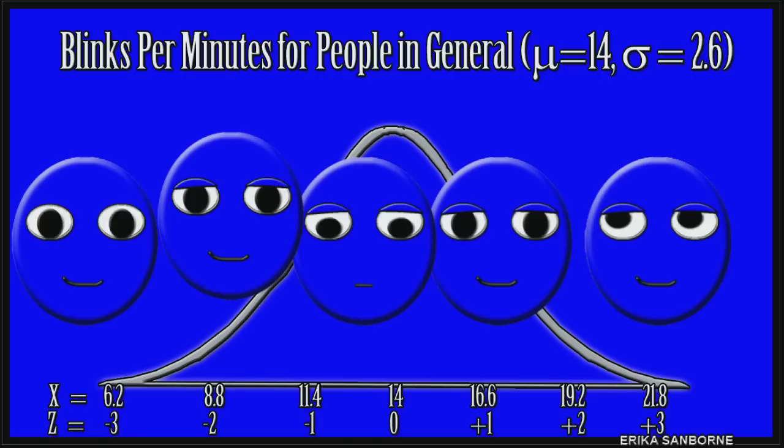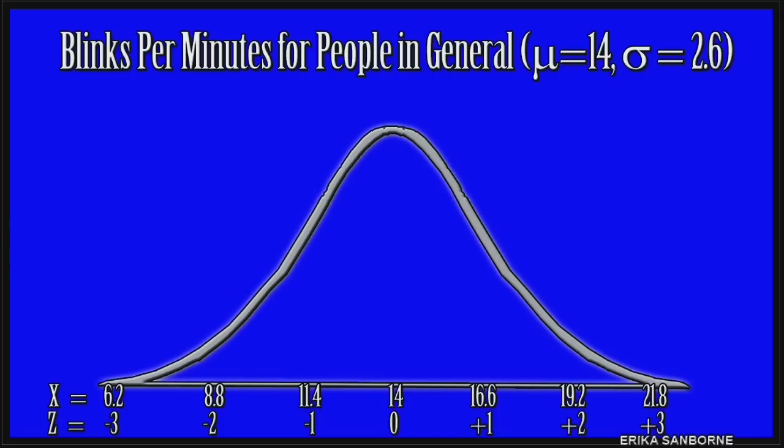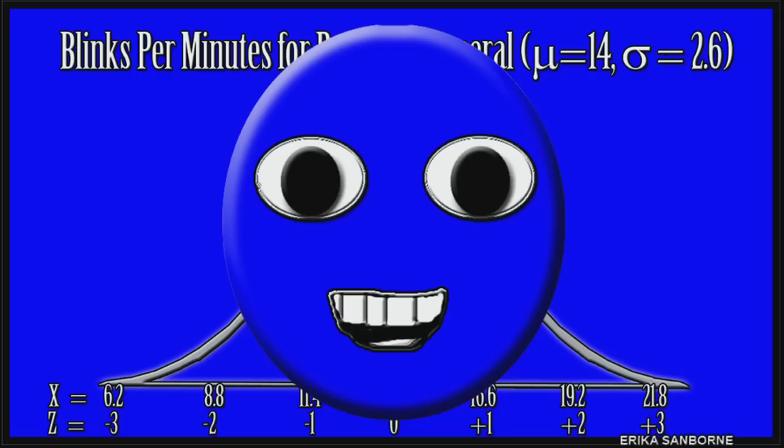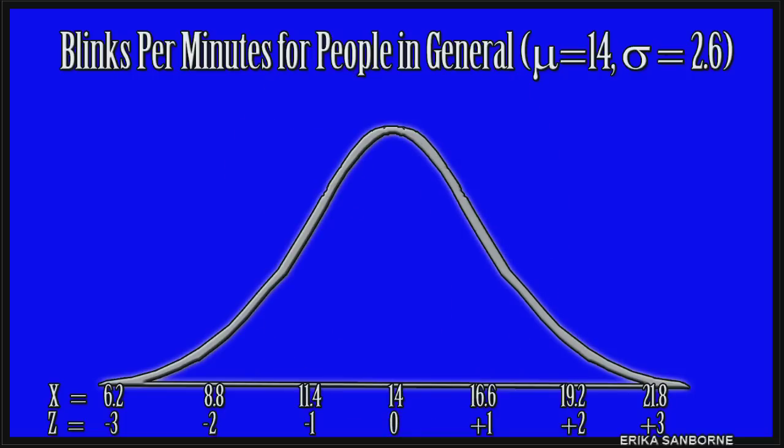Standard deviation tells us roughly the average amount that scores differ from the population mean. All people's blink times are on this picture somewhere, spread out from the left to the right, above or below the 14. And on average, a person's score will vary from 14 by 2.6 on this scale. If I just randomly picked some guy and counted how many times he blinked, just suppose he wouldn't mind that I did that. He wouldn't have to blink exactly 14 times a minute to be a normal person, right? There's definitely variation here because people are different.